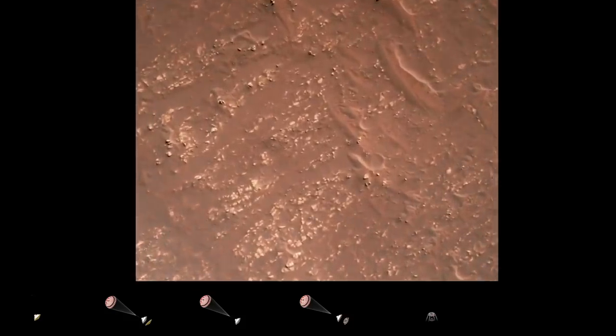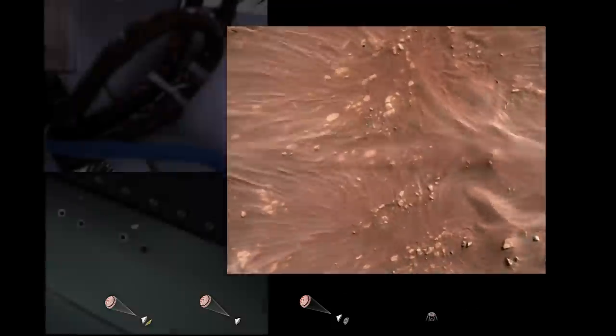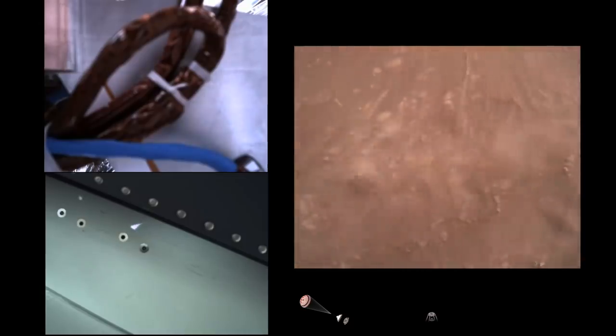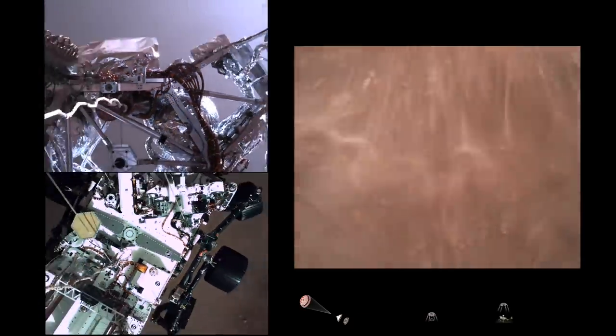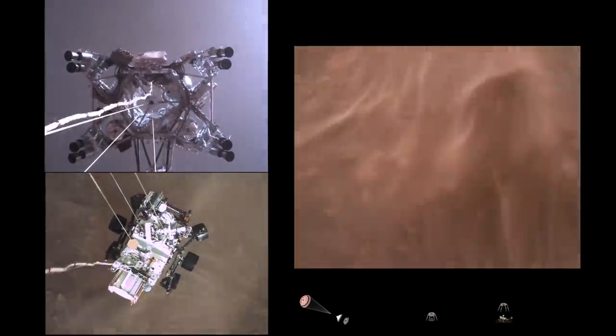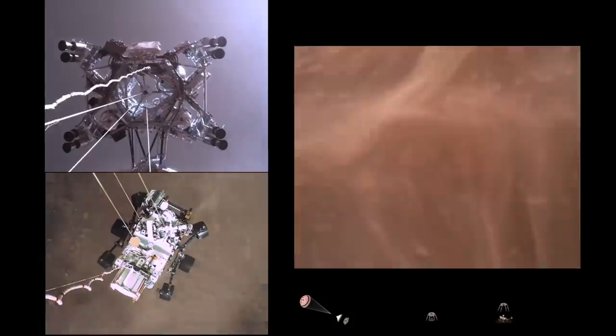We have started our constant velocity accordion, which means we are conducting the sky crane, about to conduct the sky crane maneuver. Sky crane maneuver has started. About 20 meters off the surface.